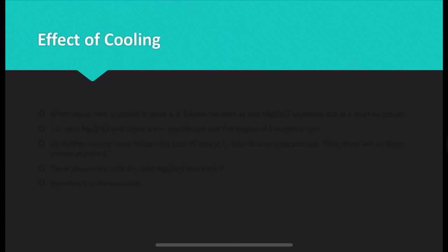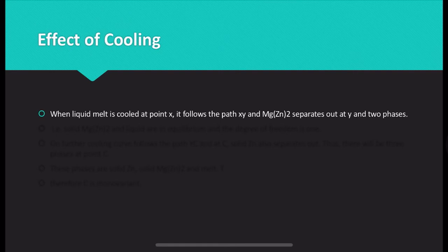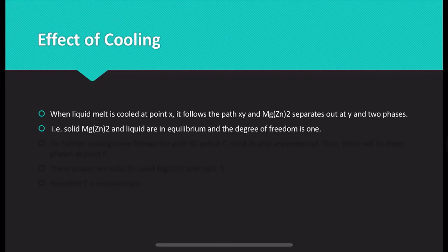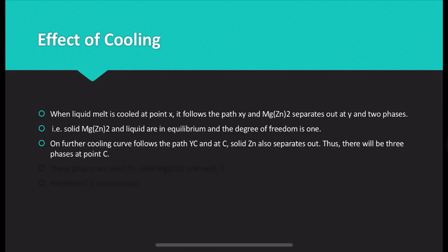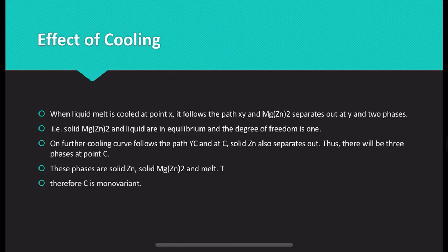Now, the effect of cooling: when liquid melt is cooled at point X, it follows the path XY, and MgZn₂ separates out at Y — two phases, solid MgZn₂ and liquid, are in equilibrium, with degree of freedom equal to 1. On further cooling the path follows YC, and at point C solid Zn also separates out, giving three phases: solid Zn, solid MgZn₂, and melt. Therefore at C the system is non-variant.